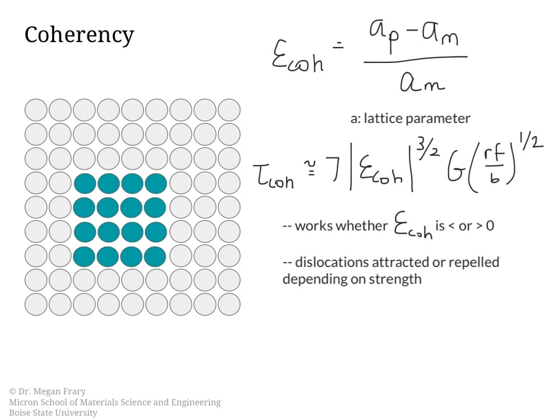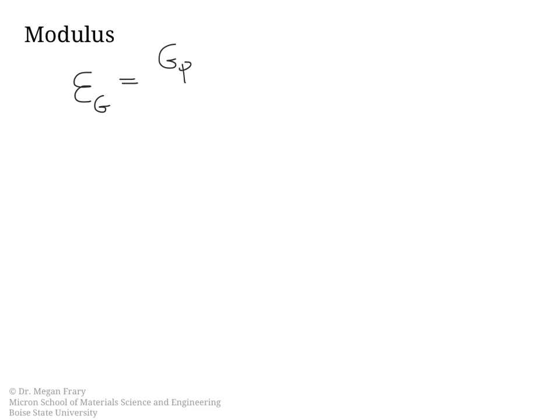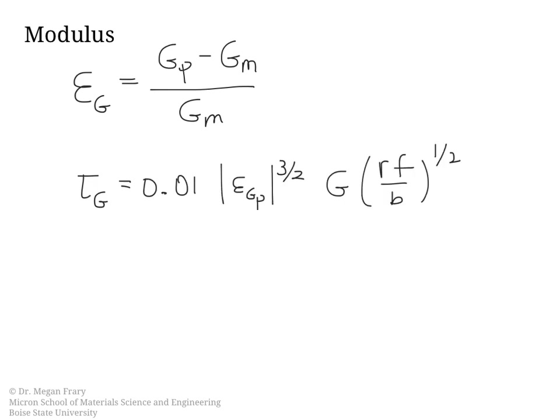The second effect is due to differences in modulus between the particle and the matrix. The modulus effect strain is just the difference in modulus between the particle and the matrix, normalized by the matrix modulus. The contribution to strength involves the absolute value of this strain term — because there will be interactions with the dislocation regardless of which is stiffer — and then G, and our usual (rf/b)^(1/2) term.